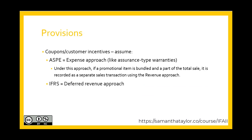Our next type of provision to discuss are coupons or customer incentives. Under ASPE, we should record using the expense approach, very similar to the assurance type warranties we just covered — as if the promotional item is bundled and part of the total sale. Under IFRS, we would use the deferred revenue approach, which is similar to what you should be familiar with from Intermediate Financial Accounting 1 — really leveraging IFRS 15.